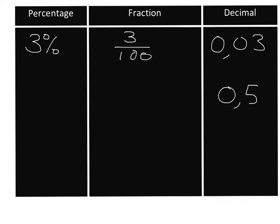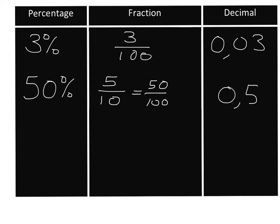Let's look at another example. Say we have 0.5 — that decimal we know will be five over ten as a fraction. To get to a percentage we must write it as a fraction over a hundred. Using equivalent fractions, we've multiplied the bottom by 10, so we must multiply the top by 10 as well, giving 50 over 100 — that's 50 percent. And to be completely neat, five tenths simplifies to one half since five and ten are both divisible by five. So 50 percent is one half, which is 0.5.